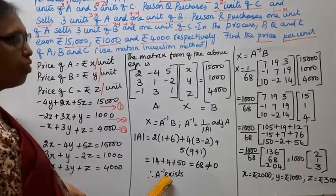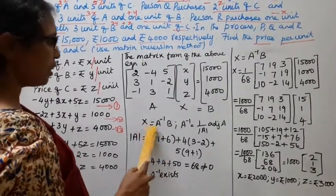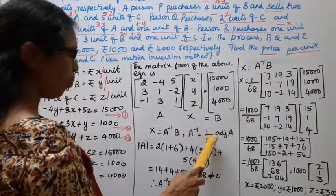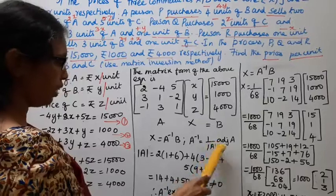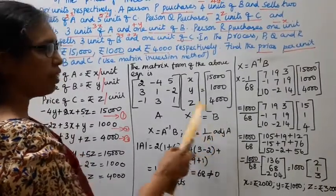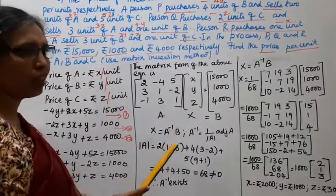Determinant of A equal to 68 does not equal to 0. Therefore, A inverse exists. Now, X equal to A inverse of B. A inverse 1 by determinant of A into adjoint A. Determinant A equal to 68.